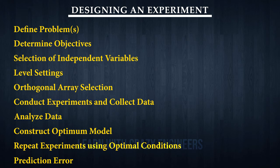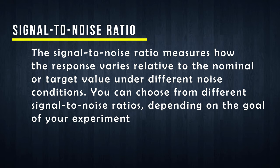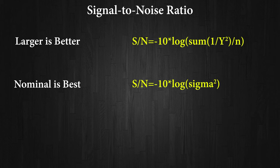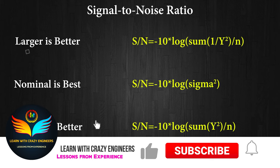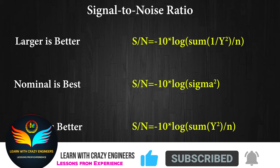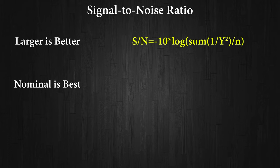Now let's move on to the next topic: signal-to-noise ratio, because it will help us to fix the problem objective. The ratio will help us define the conditions such as whether our objective is larger the better, nominal the best, or smaller the better. Using these three conditions we can easily fix our goal and solve the problem in a straightforward manner.